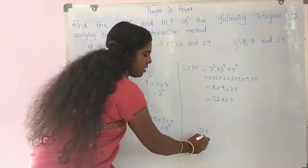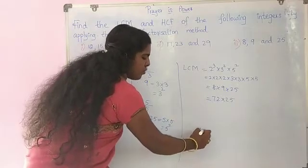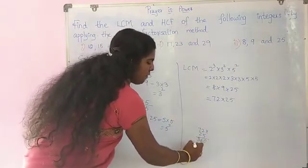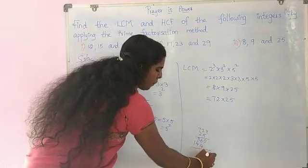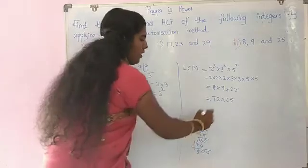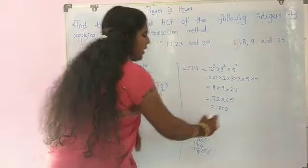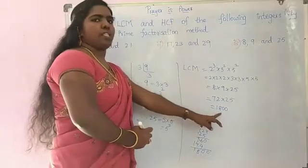72 into 25. 5, 2 sub 10. 5, 7 sub 35. 35 plus 1 is 36. 2, 2 sum 4. 2, 7 sum 14. 10, 8, 1. Therefore, 1800. LCM is equal to 1800.